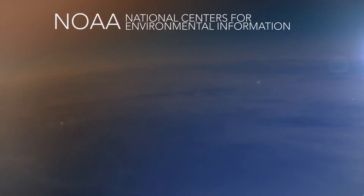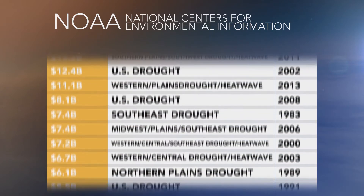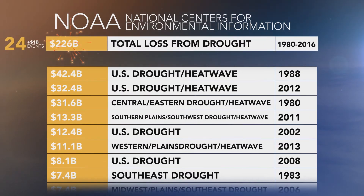The economic development of rural communities, including tourism, agriculture, and forestry, rely on natural resources that are affected by climate change. For example, more frequent and severe droughts have affected rural economies by decreasing crop yields and reducing viable livestock. According to NOAA's National Centers for Environmental Information, 24 billion dollar drought events have resulted in an estimated loss of 226 billion in the U.S.